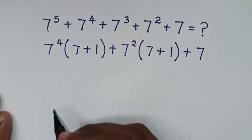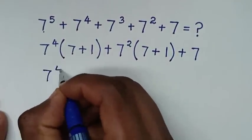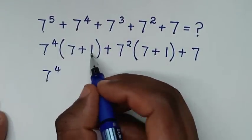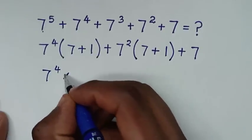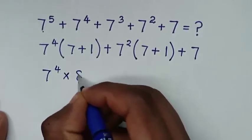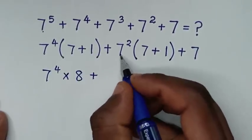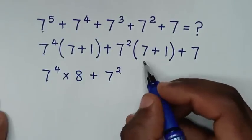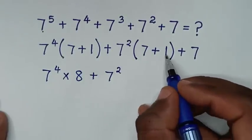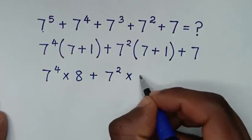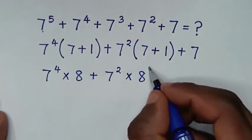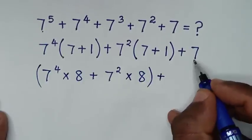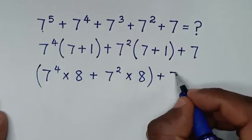Then in the next step, it will be 7 power 4 — inside the bracket 7 plus 1 is 8, so it will be times 8 — then plus 7 power 2 — inside the bracket 7 plus 1 is 8, so it will be times 8 — then plus 7.